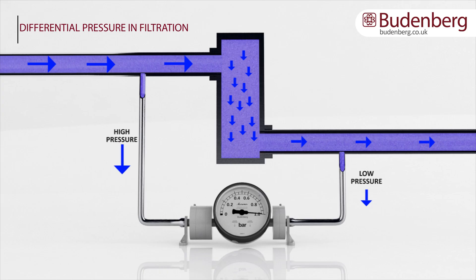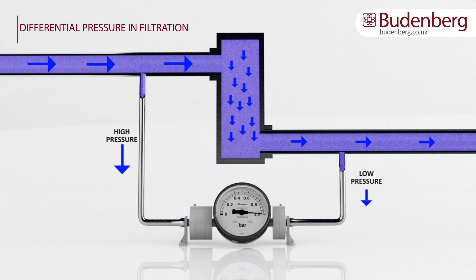Thus, the use of differential pressure gauges at regular intervals ensures that the condition of any filtration system can be checked without the need to shut down the system, reducing unplanned shutdowns and saving companies time, resources, and money.